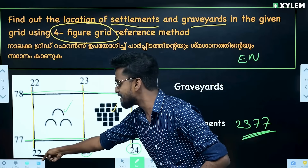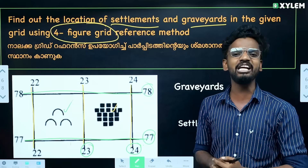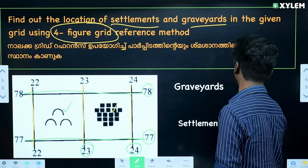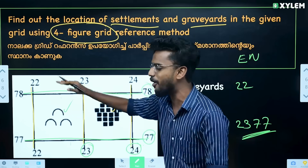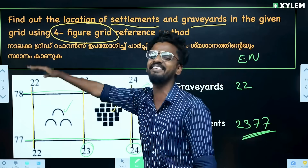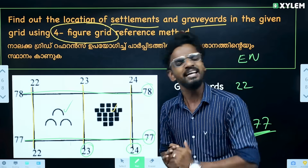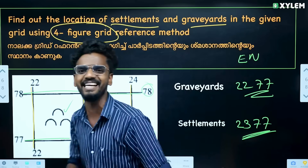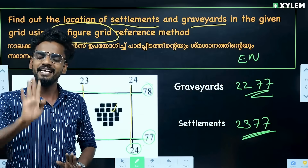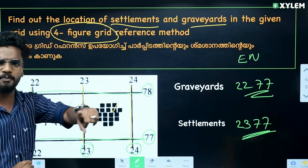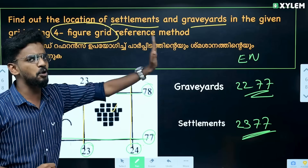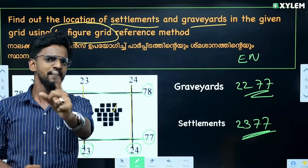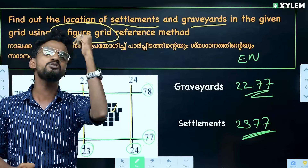The Eastings for the graveyard are known as 22 and 23. So the four-figure grid reference combines the Easting value and the Northing value — for example, 2277. Eastings is written first, then Northings. The Easting is a small value and the Northing is also a small value combined to give the four-figure reference.